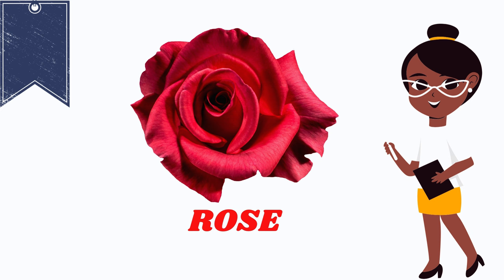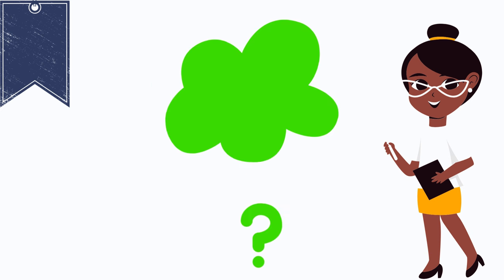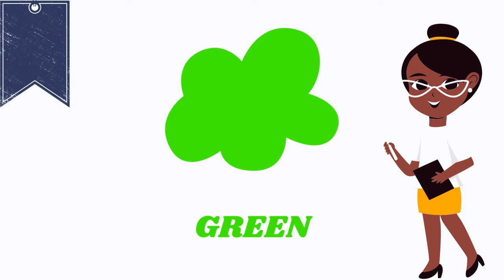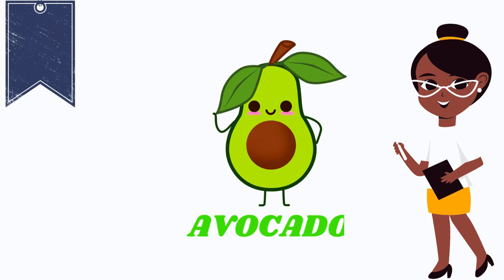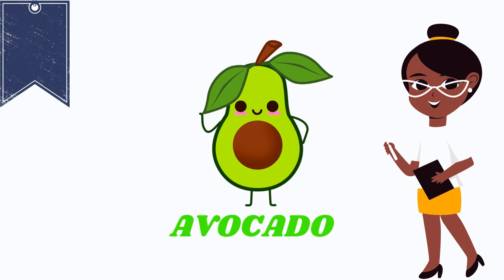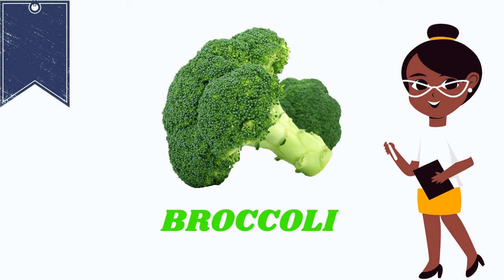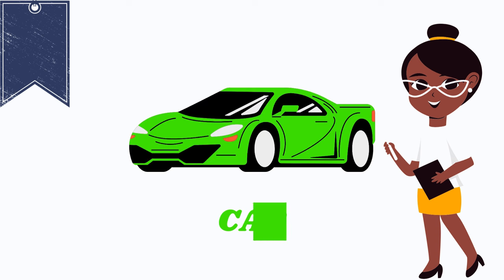Which color is this? Yes, this is the color green. It's spelled G-R-E-E-N. Green is an avocado, green is a broccoli, green is a car.